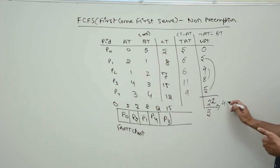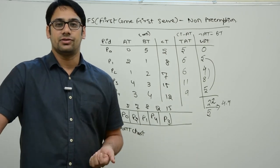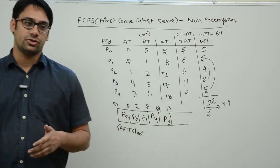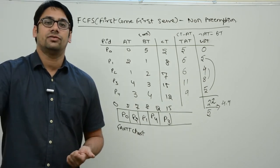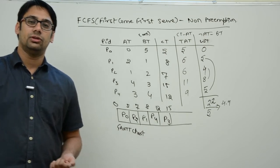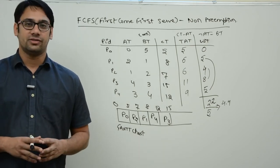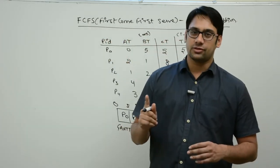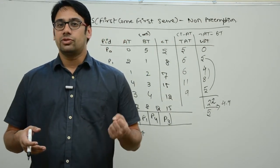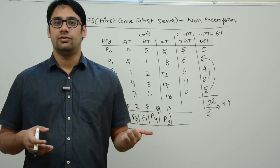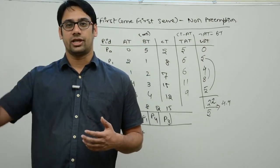Dividing 22 by 5, on average every process waits 4.4 units of time. In any scheduling algorithm — FCFS, Shortest Job First, Round Robin, or Highest Response Ratio Next — the main aim is to minimize waiting time to enhance system efficiency and throughput. Let us take one more FCFS example to explore its problem, called the convoy effect, and see why we introduce other algorithms.